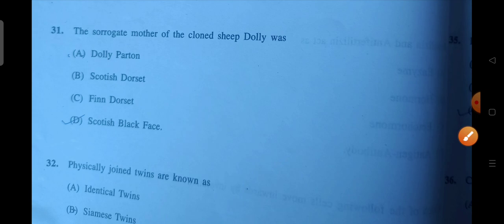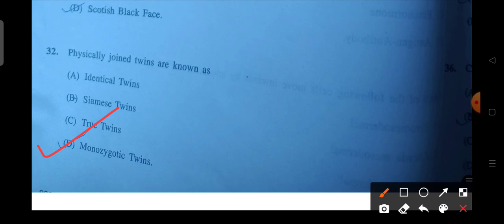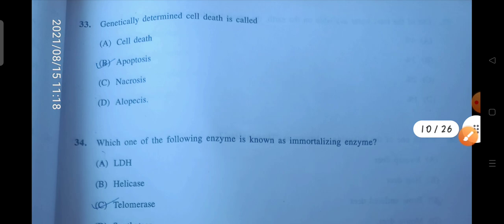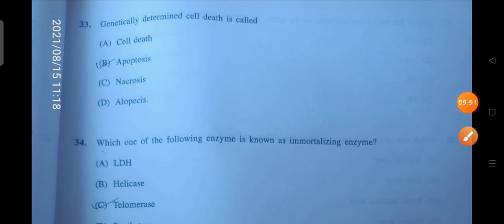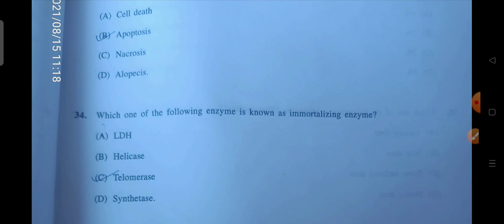Next is the surrogate mother of the cloned sheep Dolly was. So the answer is D. Next is physically joint twins are known as physically joint. So obviously they will be monozygotic. They will form from one egg. Next is genetically determined cell death is called. So what do we call? Apoptosis. B will be the correct answer.